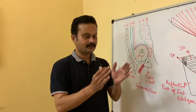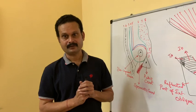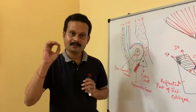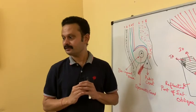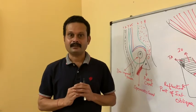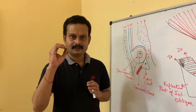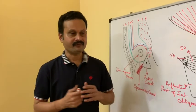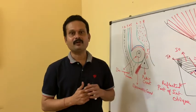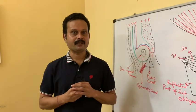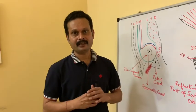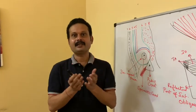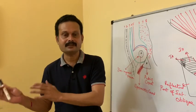The contents of the spermatic cord include vas deferens, artery to the vas deferens, testicular artery, pampiniform plexus of veins, some lymphatics, some amount of fat, genital branch of genitofemoral nerve, and sometimes very rarely suprarenal cortical tissue. All these are the contents of the spermatic cord. The spermatic cord is the content of the inguinal canal, and within the spermatic cord these contents are present.